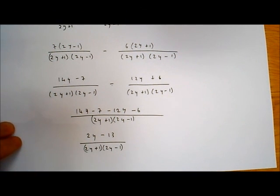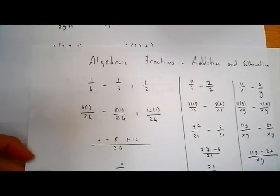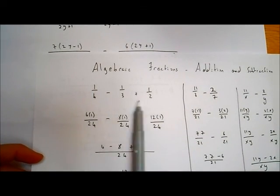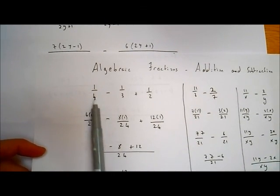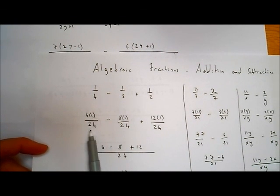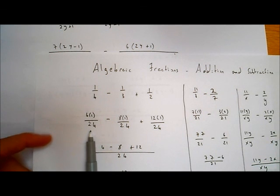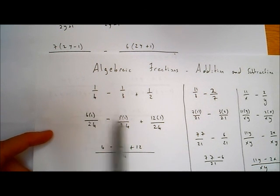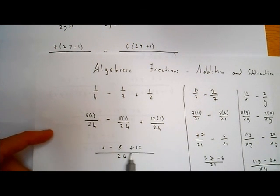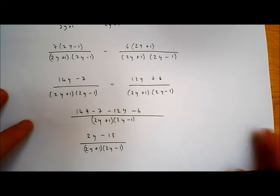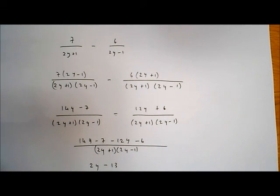So, adding algebraic fractions is exactly the same as adding ordinary fractions. You find a common denominator by multiplying the denominators together, then see how many times each denominator goes into the common denominator and multiply the numerator by that amount. The same process applies whether you have numbers or algebraic expressions.